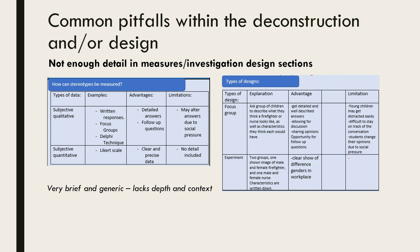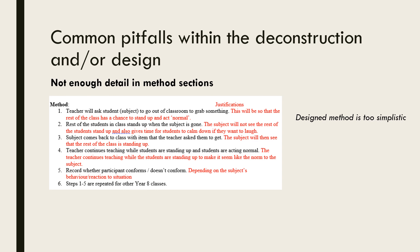Here are some examples from a deconstruction where the student has attempted to evaluate potential measures and design types, but has only done so very briefly. It is lacking a lot of depth and has not been done in the context of the deconstruction question, which was about occupational stereotypes. These tables could be inserted into any deconstruction and most of it would make just as much sense, albeit still lacking detail. Here is an example of a method section from a design that lacks detail. Furthermore, the method is too simplistic and isn't evident of a Stage 1 or Stage 2 psychology student's level of knowledge. It should be clear from the method that the student has studied psychology, and it should contain enough detail that the person reading it could easily reproduce the method.